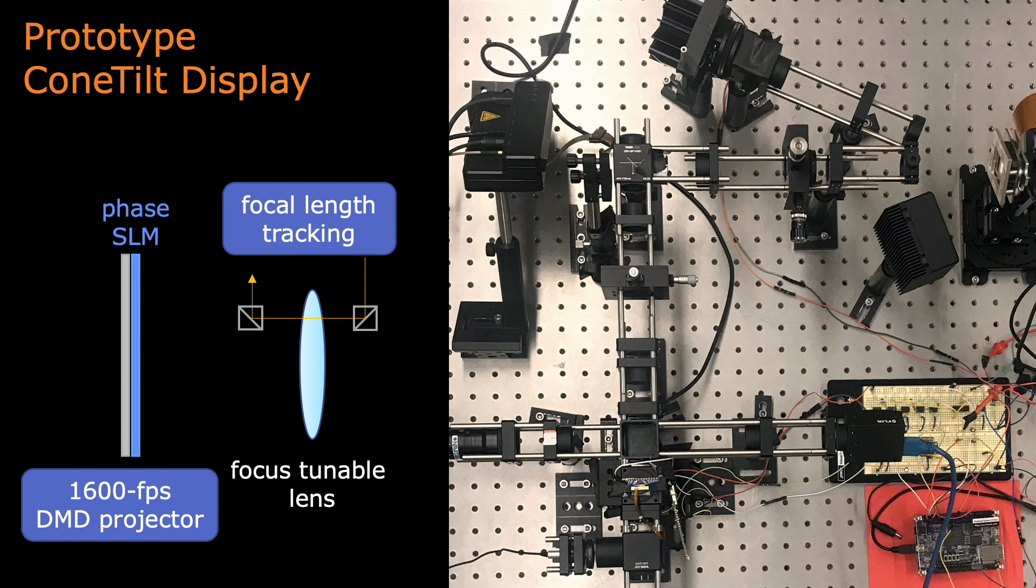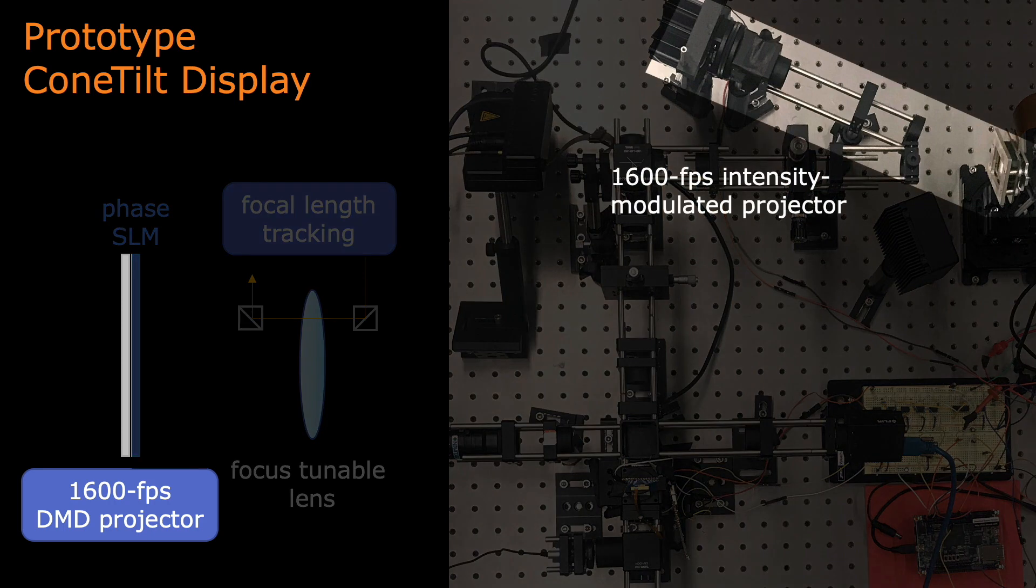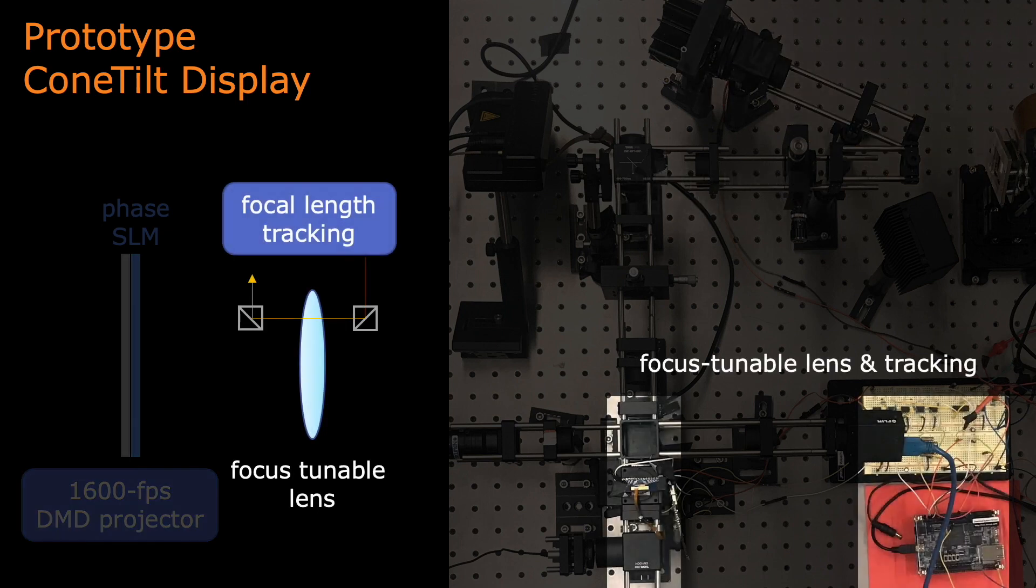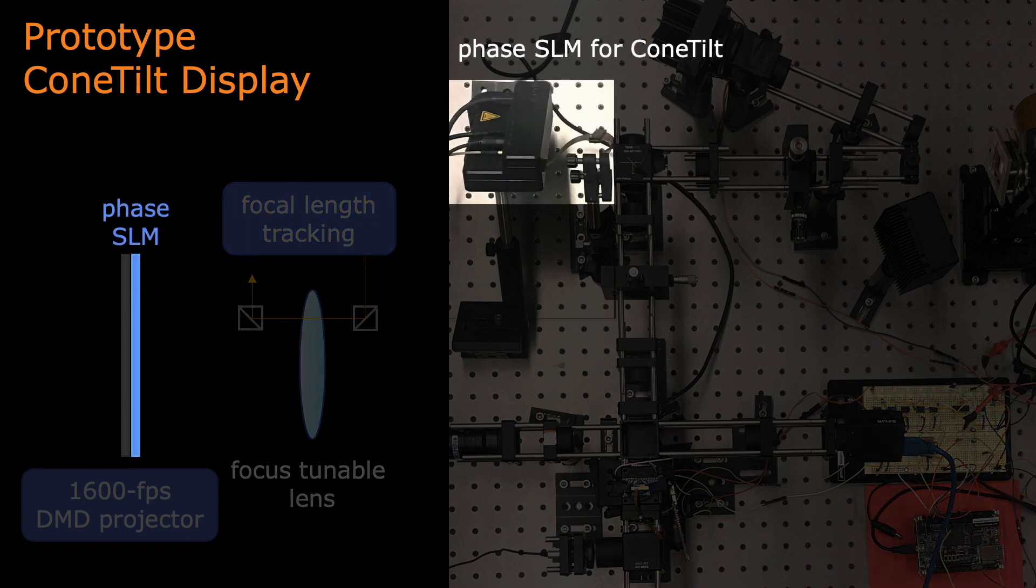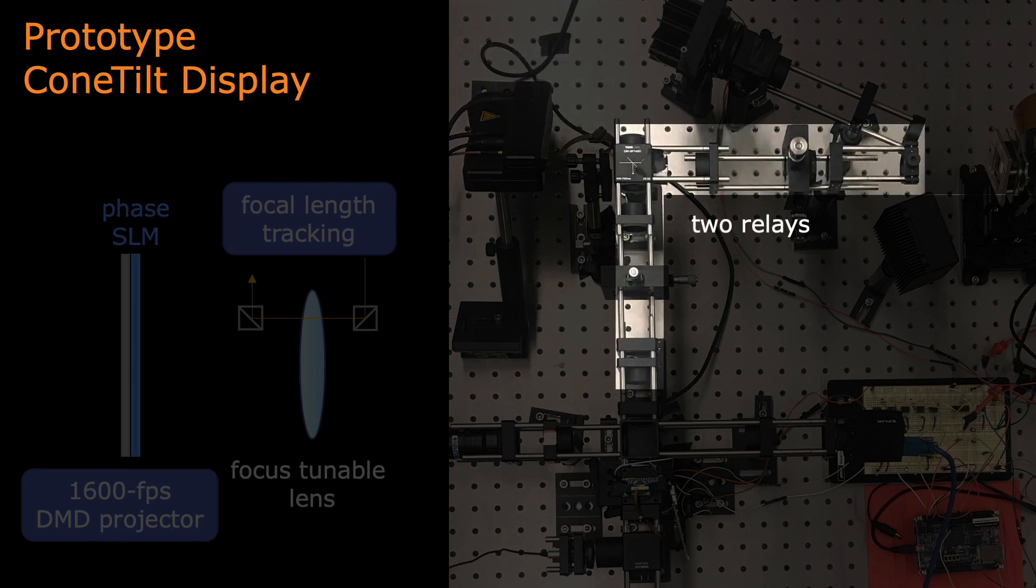Based on the principle, we built a prototype ConeTilt display, which is composed of a high-speed DMD projector, a focus tunable lens and its control circuits, and the phase SLM. We use two relays to optically co-locate the DMD and the phase SLM.